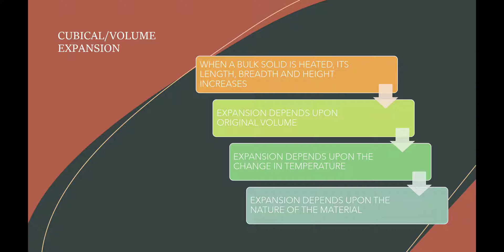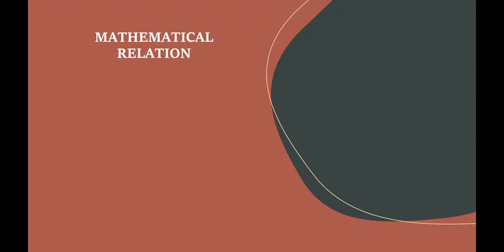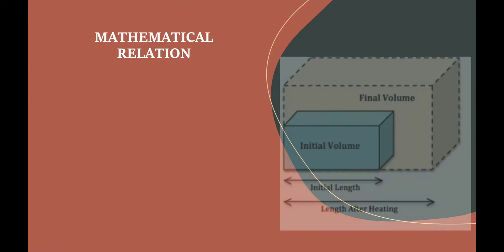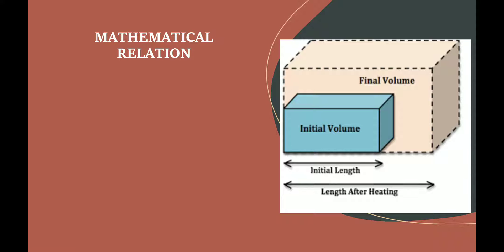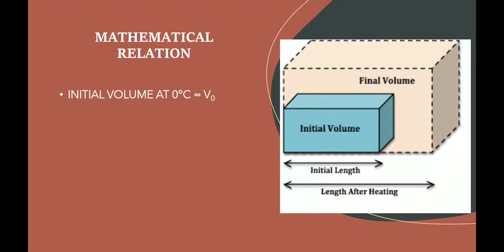Just like superficial expansion, volume expansion also depends upon three factors: first is the original volume, second is the change in temperature, and the third is the nature of the material. We will deduce a mathematical relationship between the initial volume, final volume, and change in temperature. If the volume of the block at 0 degrees Celsius is V0, then on raising the temperature to T degrees Celsius the new volume becomes VT, so the change in volume is VT minus V0, written as delta V.